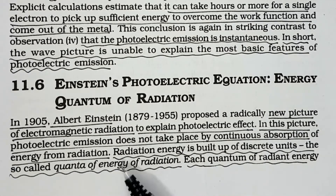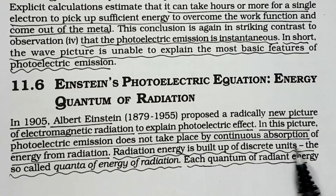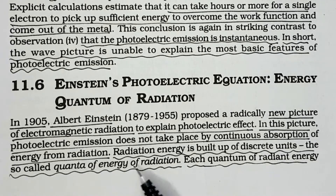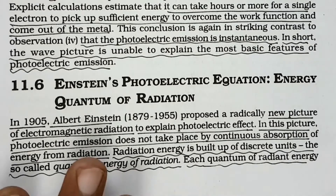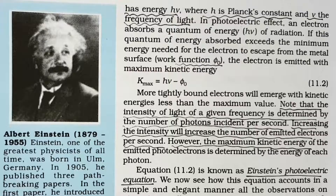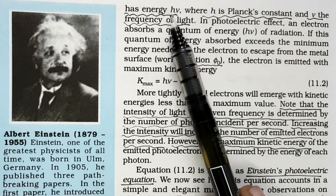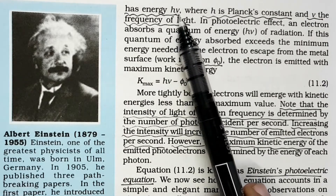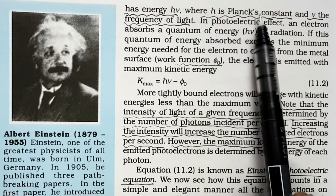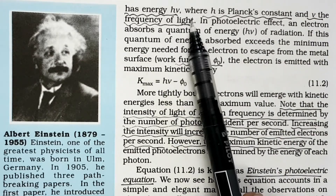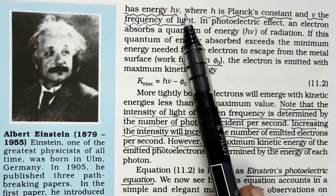Light is built up of discrete units, so called quanta of energy of radiation. Light consists of packets or bundles of energy called quanta, or photons. According to this picture, if the frequency of light is ν, then the energy of one quantum is E = hν, where h is Planck's constant and ν is the frequency of light.